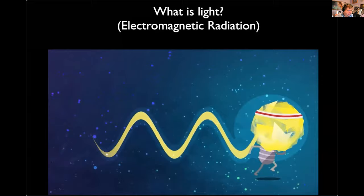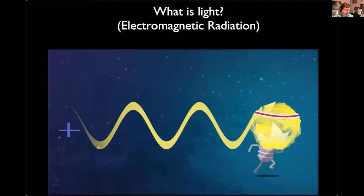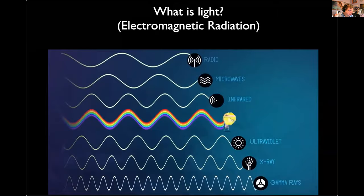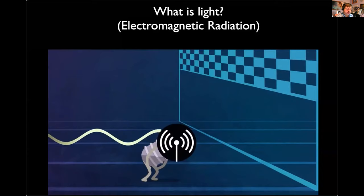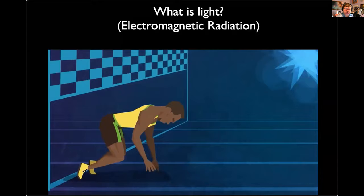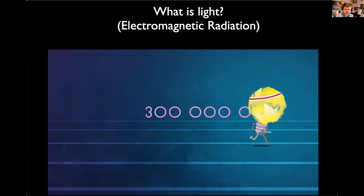We often represent light as a wave. Just like water waves, light has a wavelength, a frequency, and a speed. The different colors of optical light have different wavelengths, and so does the rest of the electromagnetic spectrum. Gamma rays are the most energetic, whereas radio waves have the least energy. In a vacuum, all light waves — even radio waves — travel at an incredible speed of 300 million meters per second.